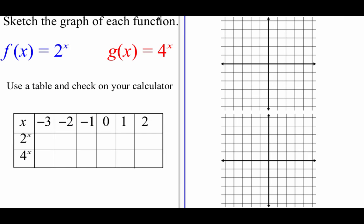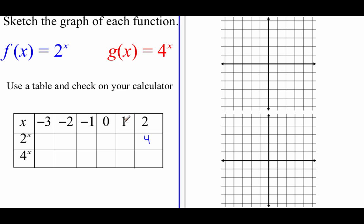Next thing we're going to do is a little bit of graphing with some of these exponential functions. We're going to graph out two functions: f of x equals 2 to the x and g of x equals 4 to the x. We're going to use a table to help us out and then check our answers using our calculator. I'm going to start with this 2 to the x function and plug in different x values, starting on the right-hand side because these are the numbers that are going to be easiest to deal with. If we plug in a 2, well, 2 squared is 4. If we plug in 1, 2 to the first power is just 2.